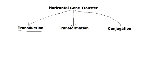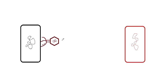We will see that in more detail when we learn about the mechanism of this process. The process starts where the donor bacterial cell, which is going to transfer its genetic material to the recipient cell shown in red, is going to be attacked by a bacteriophage.